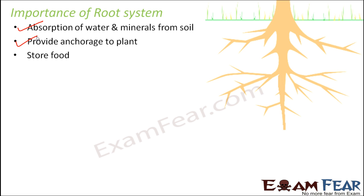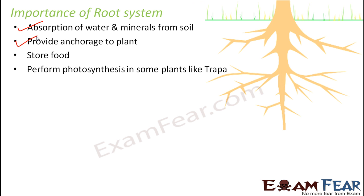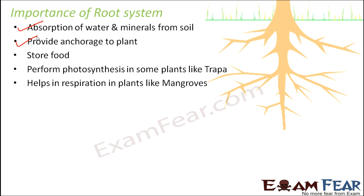Roots also store food — as seen in certain plants like radish and carrot, which have swollen roots where food is stored. They perform photosynthesis, like in trappa, where chlorophyll is present. They also help in respiration in plants like mangroves, which have specialized structures called pneumatophores that come out above the water surface and take in oxygen from the atmosphere.